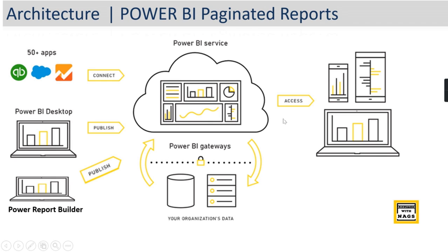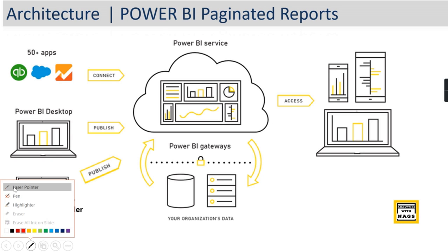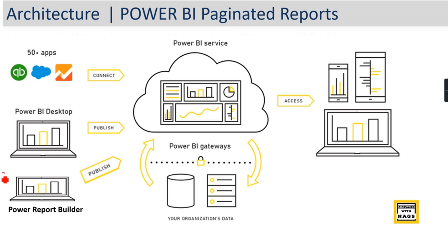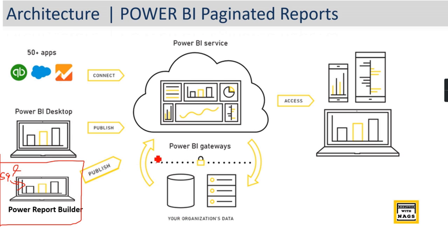One quick note: till now whatever you have seen in this playlist, I have a SQL source. From this SQL source I have read this Power BI report, and we have only seen this within Power BI Report Builder. Now once I publish it, I need some gateways — this gateway should connect to my SQL source. That is how it should work.